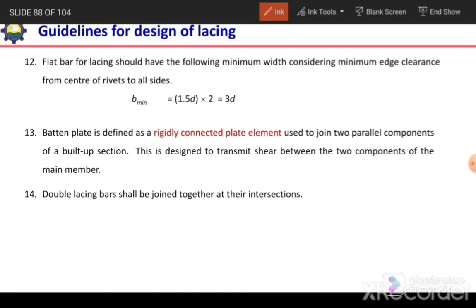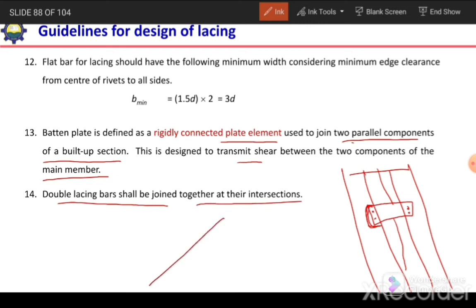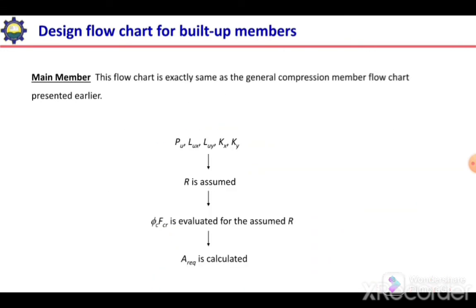Batten plates are rigidly connected plate elements used to join the two parallel components of a built-up section and are designed to transmit shear between the two components. They must be connected with at least two rivets parallel to the axis of the member, or welded to the flanges of the individual sections. For double lacing, the lacing elements should be joined at their intersection point using a rivet. In the next video we will cover the design flow chart for the built-up section and design of lacing.